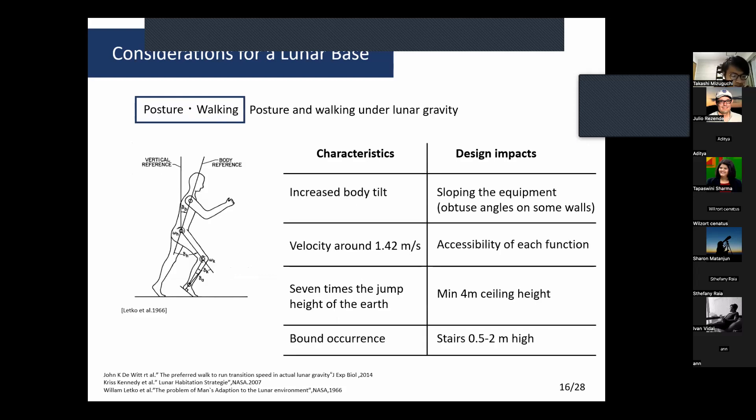Also important is human posture and walking style under lunar gravity. It would be more advantageous for walking as if they were skipping, and the height of the jump is higher. Walking velocity is around 1.4 to 2 meters per second, so accessibility to each function is important.